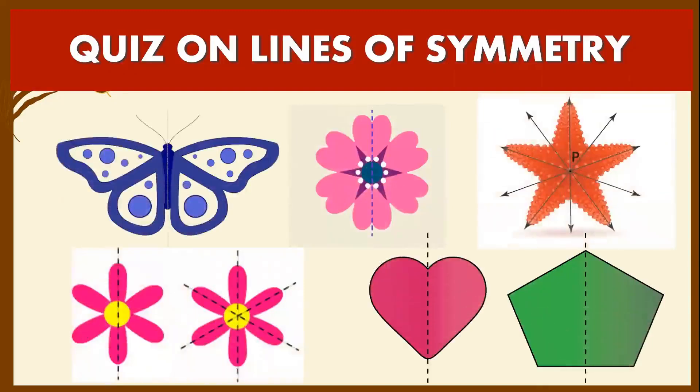Quiz on lines of symmetry. We know lines of symmetry divide the shape of an object into two equal parts or two or more identical parts.